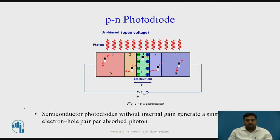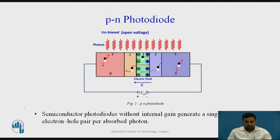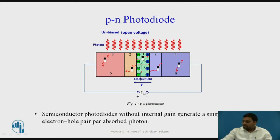We will discuss only PN photodiodes and PIN photodiodes, because these two photodiodes generate a single electron hole pair per absorbed incident photon. In this figure, you can see that we have one PN junction photodiode where I have numbered the different regions as 1, 2, and 3. The first region, the middle one, is the drift region, and number 2 is the diffusion region.